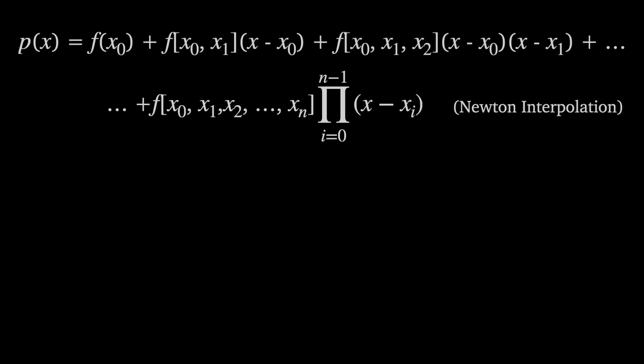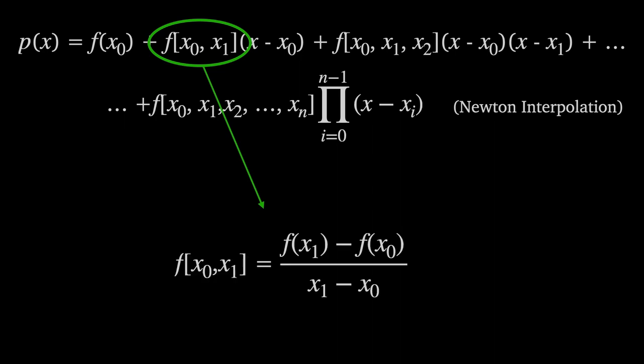A strong hint for this can be found by looking at the coefficient of x, the so-called first order divided difference, f of x1 minus f of x0 divided by x1 minus x0. Anyone who studied calculus might recognize this as the gradient of the straight line which goes through the curve of f of x at x0 and x1.